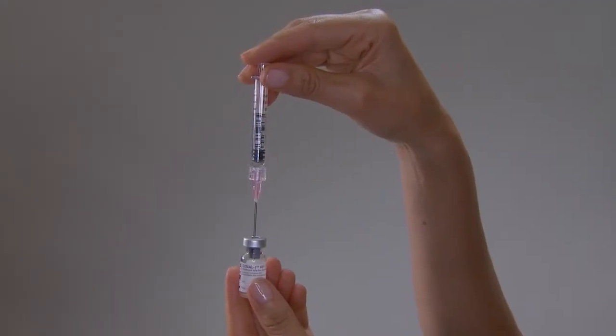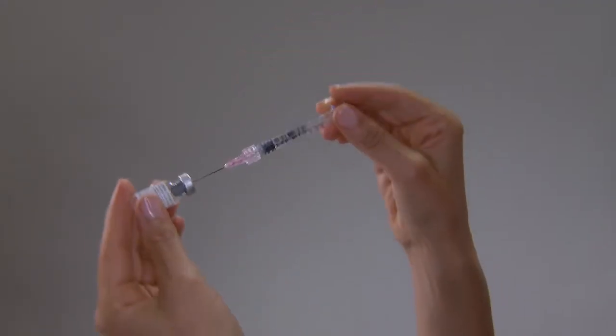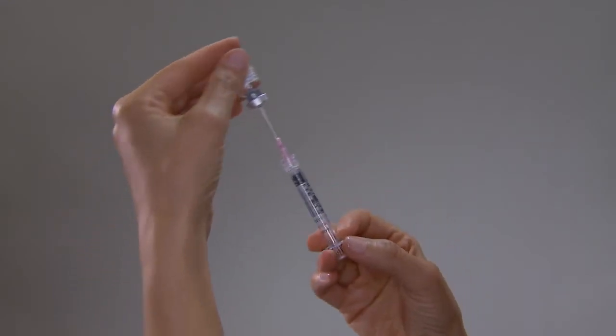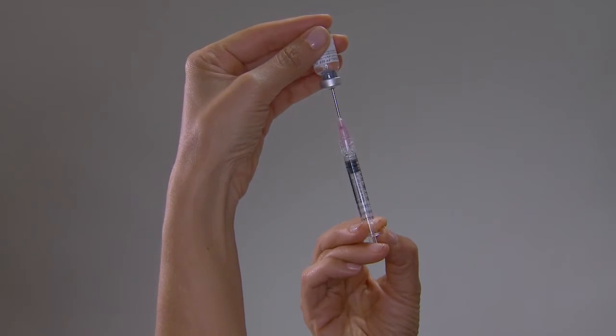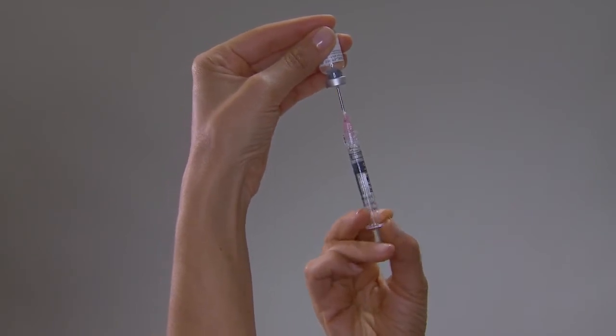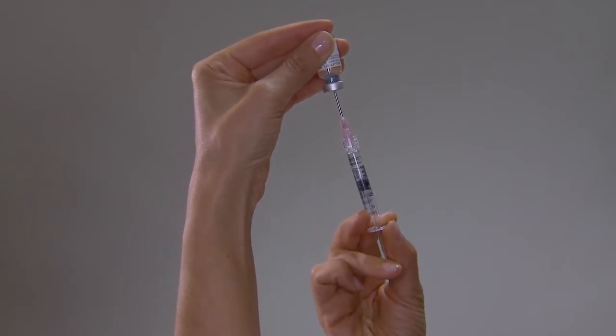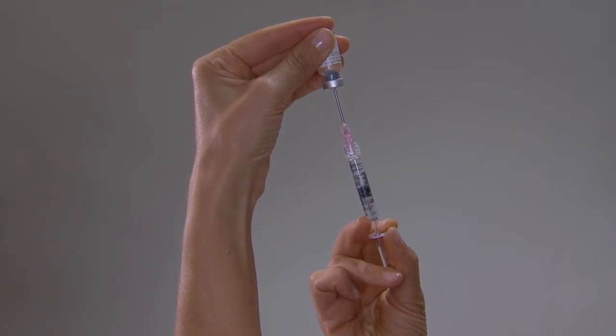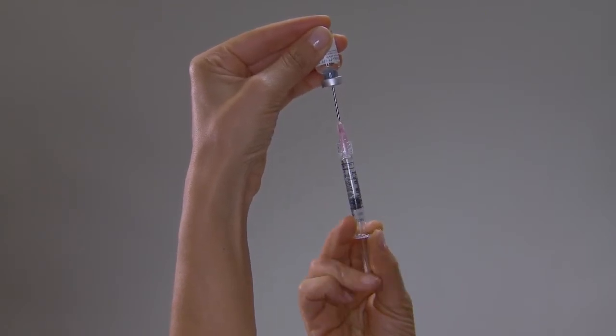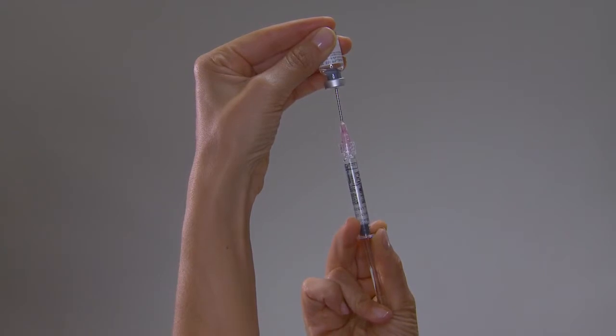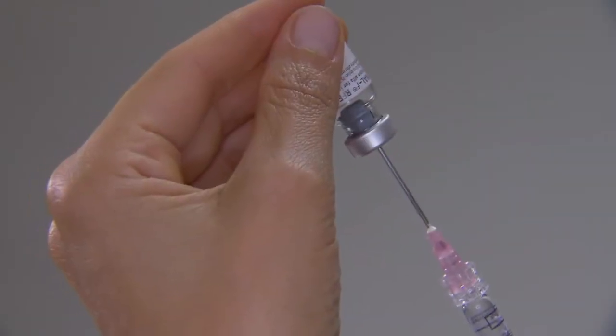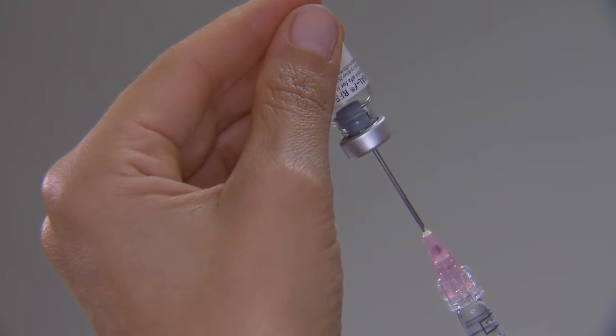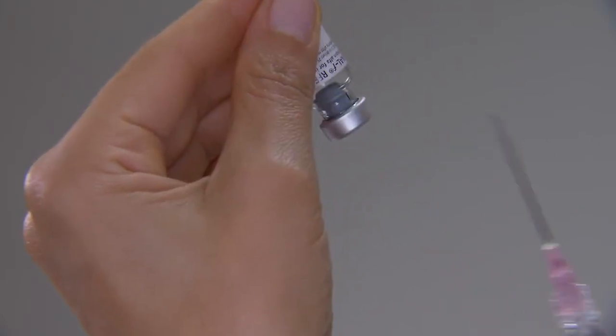Without removing the 18-gauge 1 1⁄2-inch pink needle, invert the vial and slowly pull back the needle as far as needed and withdraw the entire contents of the vial into the syringe. Make sure the tip of the needle remains in the solution by slowly backing the needle out of the vial to withdraw as much of the solution as possible. Remove the 18-gauge 1 1⁄2-inch needle and syringe containing the solution from the vial.